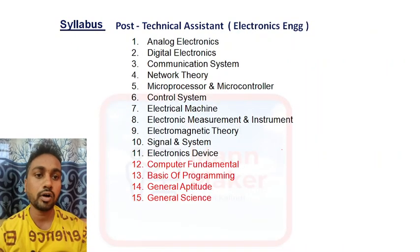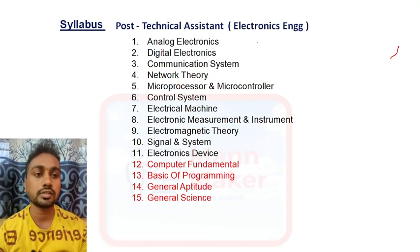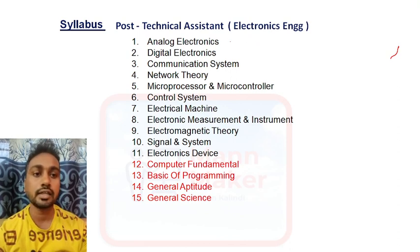Now if we talk about syllabus, this syllabus belongs to the Technical Assistant post for electronics engineers — electronics branch. In this exam they will ask 80 MCQs and all 80 questions will be technical only. You will get questions from analog electronics, digital electronics, communication system, network theory, and microprocessor and microcontroller.